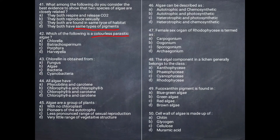Next question: Which of the following is a colorless parasitic alga? Batrachospermum is a red alga but it is colorless in appearance.